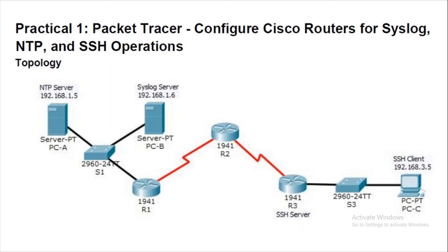Let's start with practical number 1 — Packet Tracer: Configure Cisco router for Syslog, NTP and SSH operations. This is the configuration they have given. We need 3 routers, 2 servers, 1 switch for 2 servers and 1 switch for 1 PC. You can see it on the right side, and accordingly we will define the network.